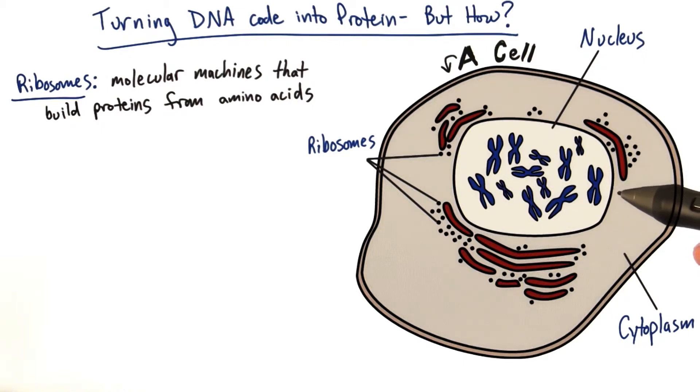How do you think the cell is going to solve this problem of having the information segregated away from the machinery needed to actually build proteins? This is a real physical problem that has to be overcome.